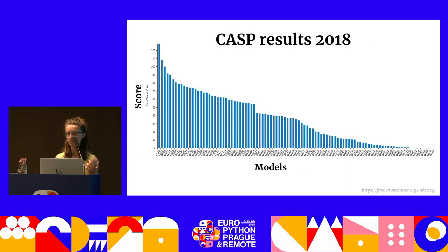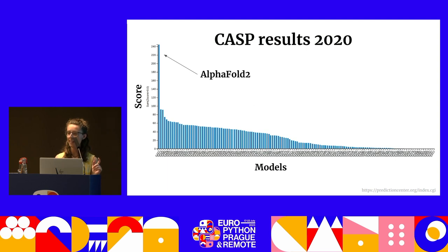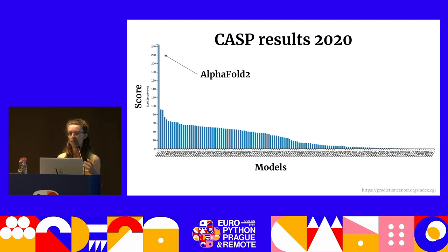In the past years, the leaderboard had many models competing on the X axis, with prediction quality on the Y axis. Then in 2020, one tool completely rolled over all the others — it was called AlphaFold. The best thing about this is that its precision was almost at the level of what we can achieve with our experiments — those costly experiments running for years. So that's a great thing to have.